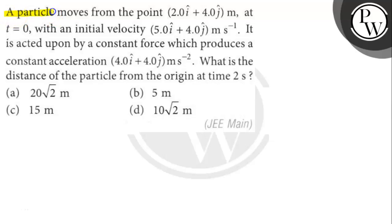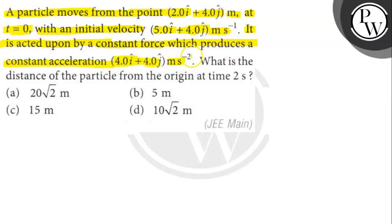Let's read the question. A particle moves from the point 2 i cap plus 4 j cap meter at t equals 0 with an initial velocity 5 i cap plus 4 j cap meter per second. It is acted upon by a constant force which produces a constant acceleration 4 i cap plus 4 j cap meter per second square. What is the distance of the particle from the origin at time 2 seconds? From the given initial velocity vector and acceleration vector, we can find the displacement vector of the particle at the end of 2 seconds.